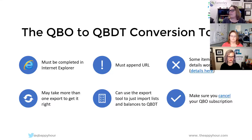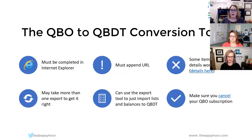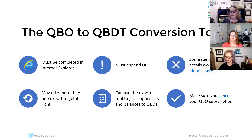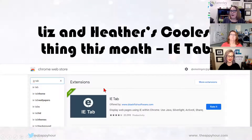Some items and details won't convert — the details are in the hyperlink for you. It may take more than one export to get it right. This is actually in Intuit's support: if your data does not export correctly to desktop from online, try again — it may do it better the second time. Or you could use something like Transaction Pro to make sure all of it comes over correctly. You can also use the export tool to just import lists and balances into QuickBooks Desktop. And please cancel your subscription after you have done the export so you don't continue to pay for something you're not using, including payroll.